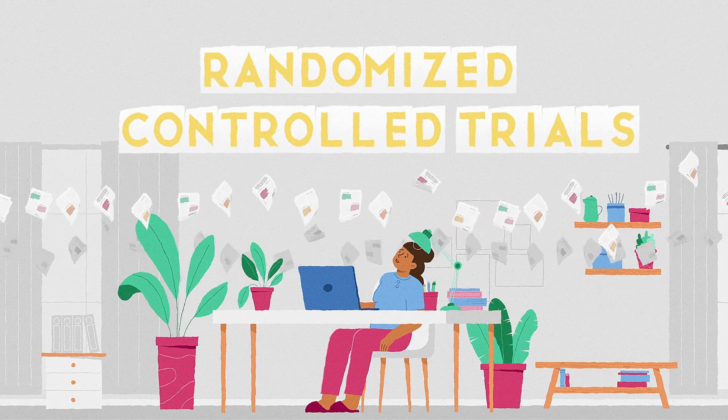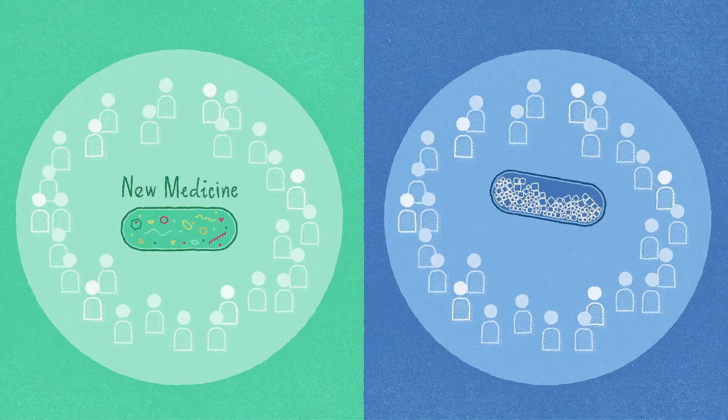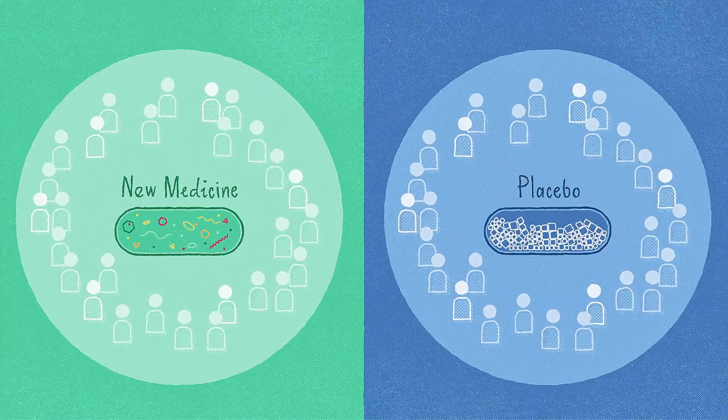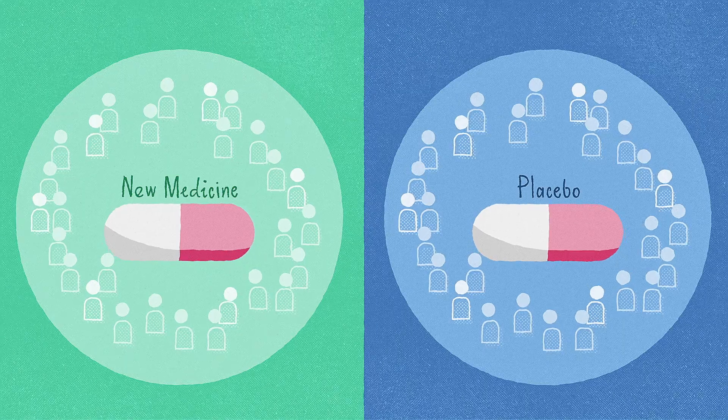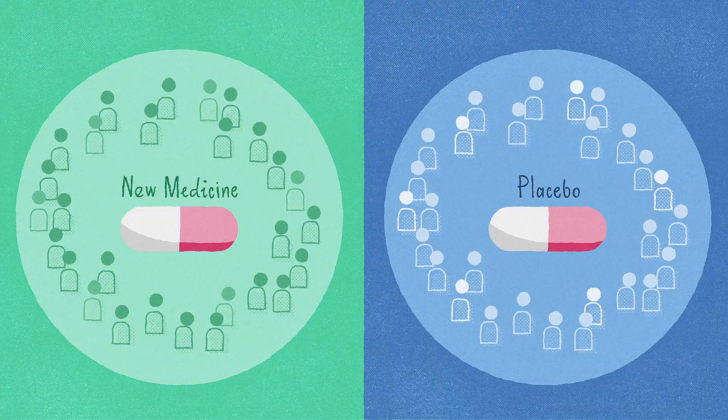Randomized controlled trials are the best way to figure out if a new medicine works. Often in a randomized controlled trial, one group of people receives a new medicine, while the other gets a placebo, a harmless substance that looks just like the medicine being studied. Both groups usually get the standard of care as well.